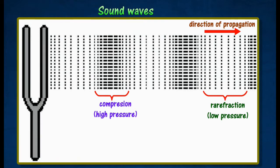Wavelength of sound is equal to the distance between two successive regions of compression or two successive regions of rarefaction.